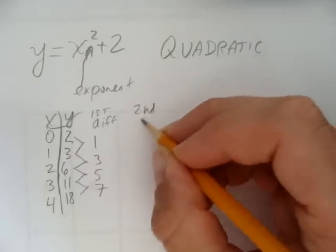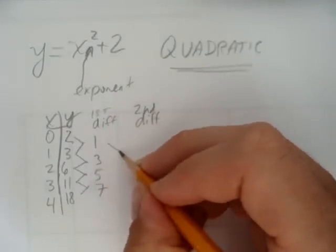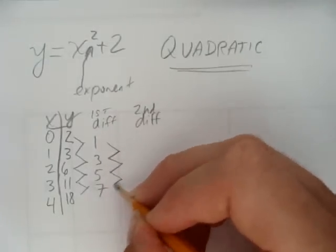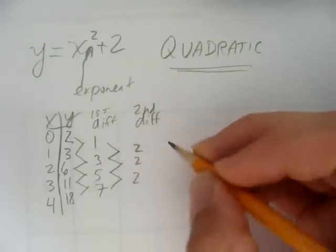What you see here is a very distinct pattern, again, underlying the fact that it's a quadratic. The first differences are all increasing by the same amount, and the second differences are all equal.